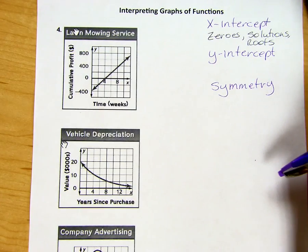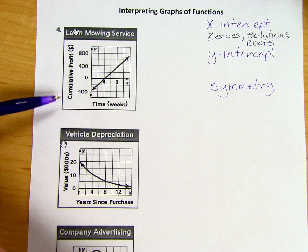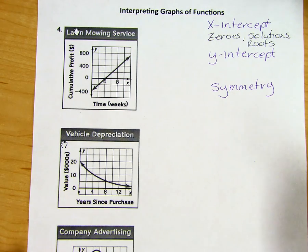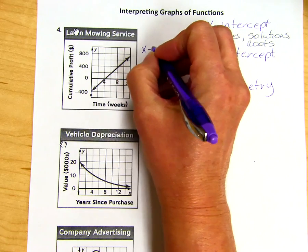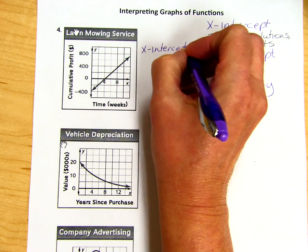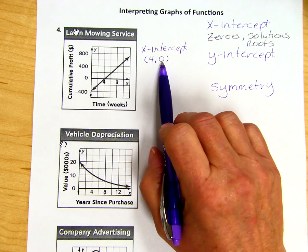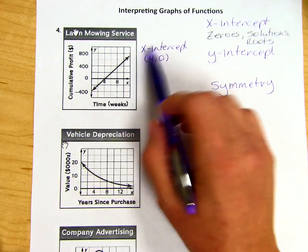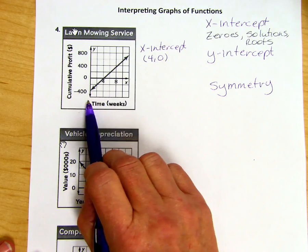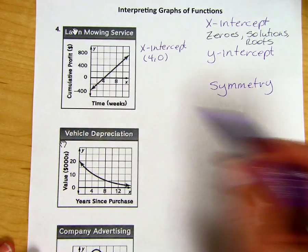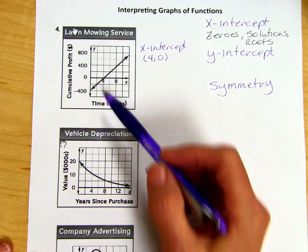Looking at the first graph of lawn mowing services, we see that the x-axis tells us about time and the y-axis tells us about profit for this service. Our x-intercept is at four weeks, the point (4, 0). This is our zero because the value of y is zero. So it took four weeks for this lawn mowing service to have a profit of zero.